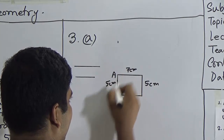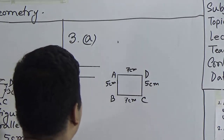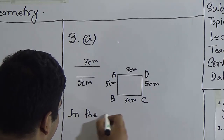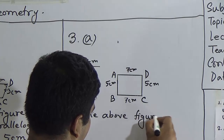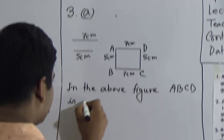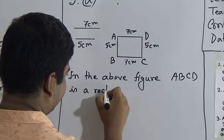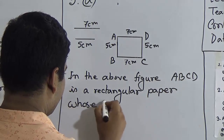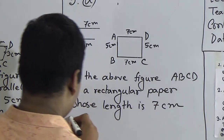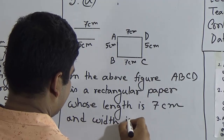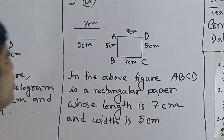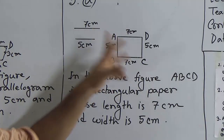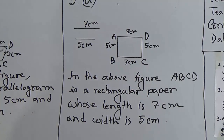We label the vertices A, B, C, D. The sides are 7 centimeter and 7 centimeter for the longer sides, and 5 centimeter and 5 centimeter for the shorter sides. In the above figure, ABCD is a rectangle whose length is 7 centimeter and width is 5 centimeter. I hope you have understood. Now, part B: write down the three characteristics of the above figure, which is a rectangle.